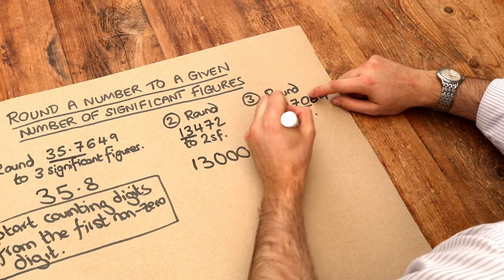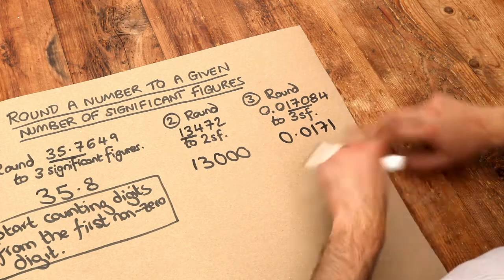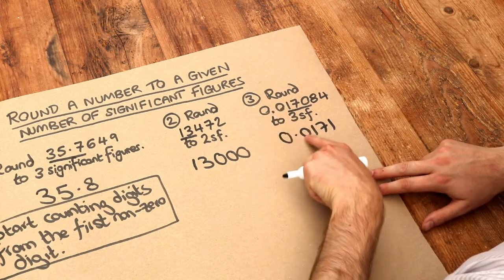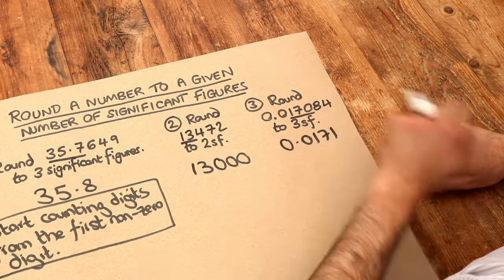So we therefore get 0.0171. And again we need to put those leading zeros on the front. Because otherwise the place value of these digits is going to change. And we don't want that.